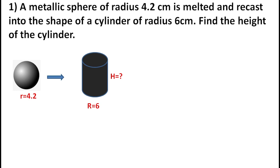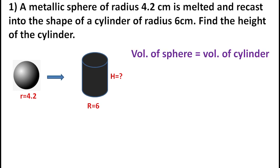Since the sphere is melted to form the cylinder, the volume of the sphere and the cylinder will be the same. The formula for the volume of a sphere is 4/3 π r³, and the volume of a cylinder is π r² h. Setting these equal, the π and π will cancel.